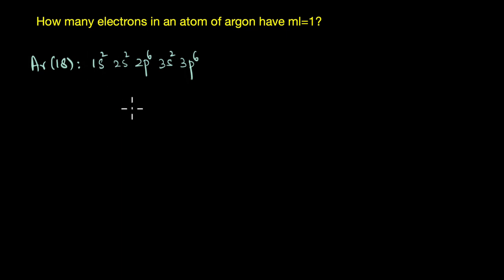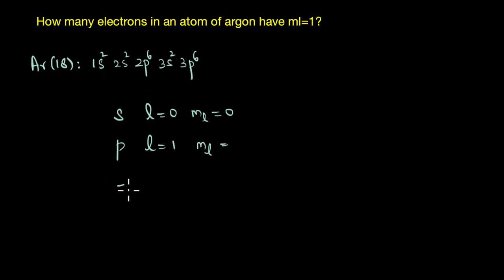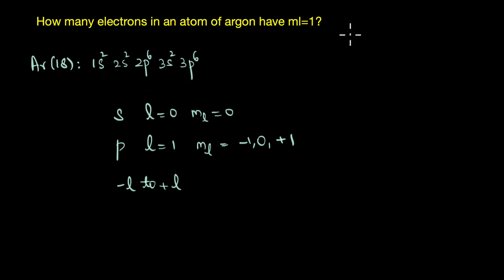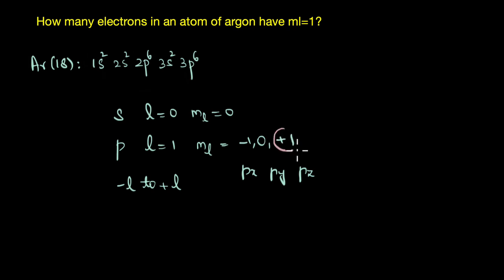Argon has only s and p orbitals. For an s subshell, l equals zero and ml is also zero. For a p subshell, l equals one and ml can range from minus one to plus one, giving minus one, zero, and plus one — corresponding to the three orbitals px, py, and pz. The ml value tells us the orbital orientation: px along the x-axis, py along the y-axis, and pz along the z-axis. So electrons with ml equal to one belong to p orbitals.